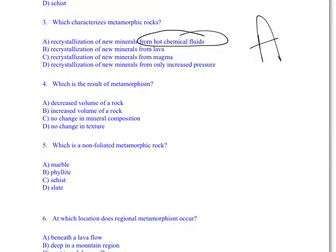Which is a non-foliated metamorphic rock? Marble is non-foliated. Phyllite, schist, and slate are all foliated, so the answer is A.